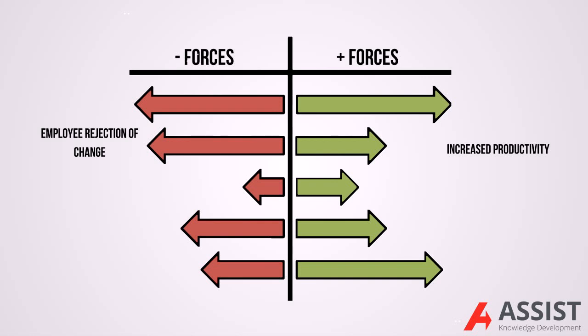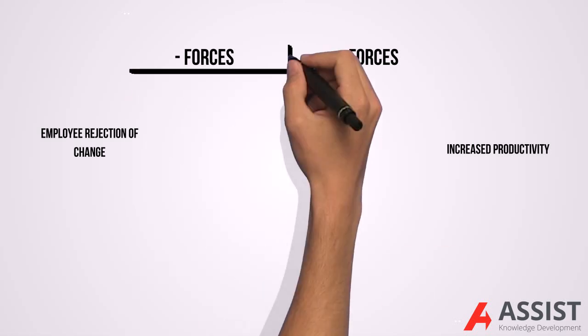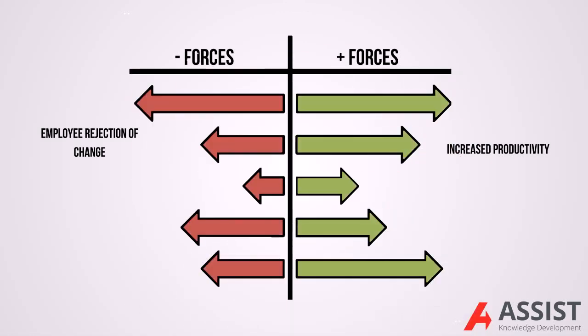Once this has been achieved, the size of the negative arrow will decrease, and the size of the positive arrow will increase. This will reflect that there is a stronger force in support of the proposal, and imply that there is a higher chance of the proposal being accepted.